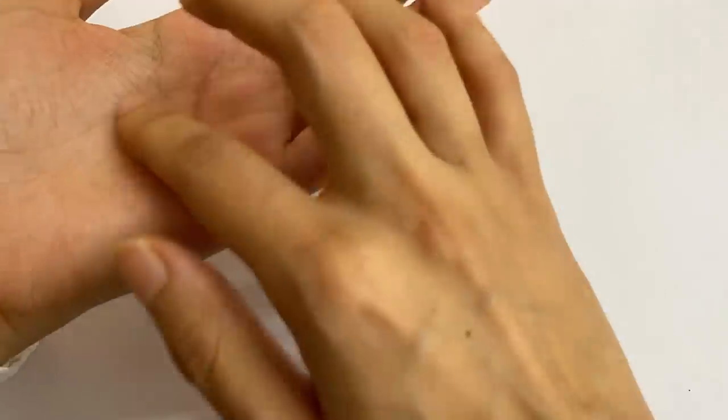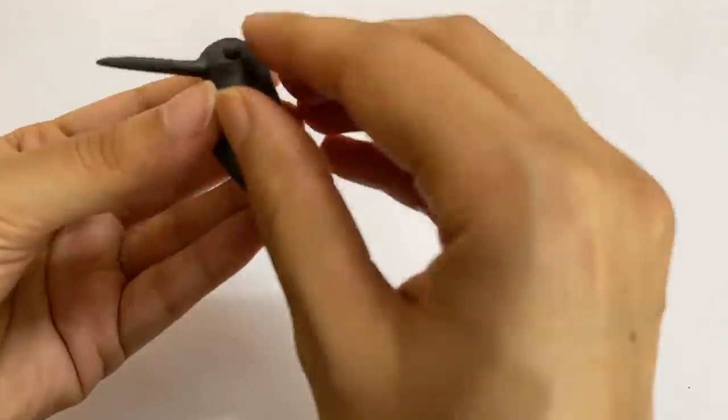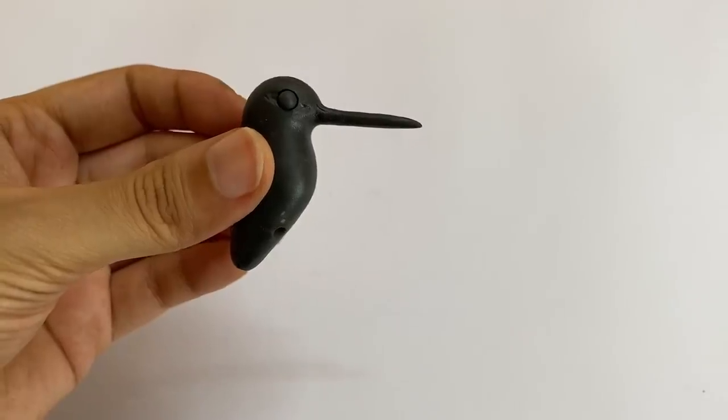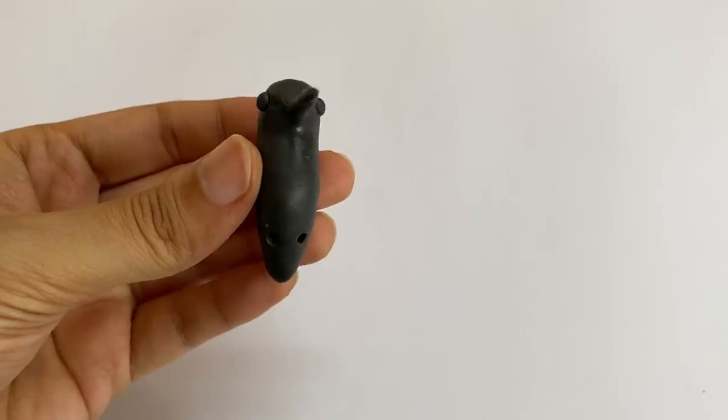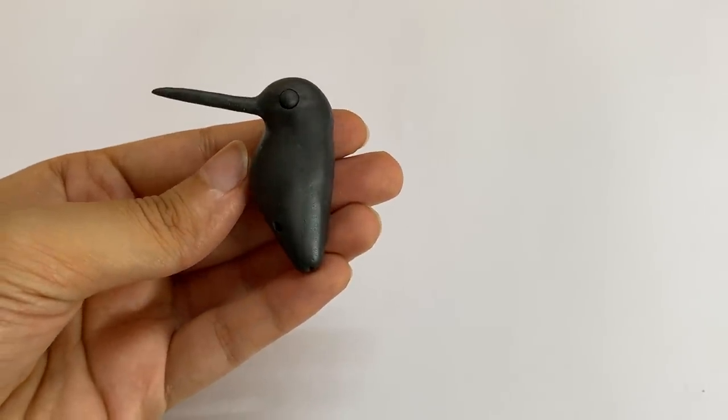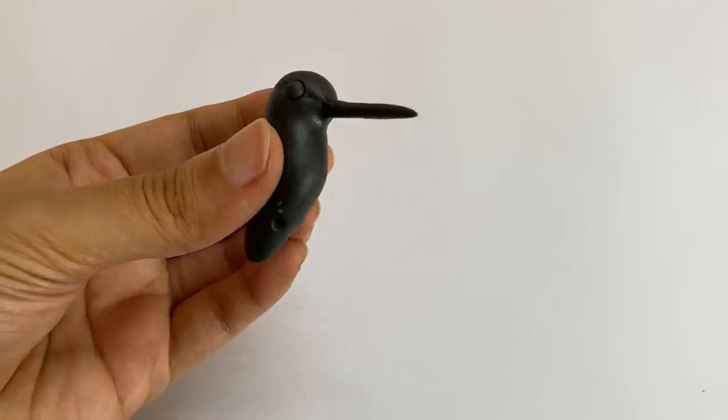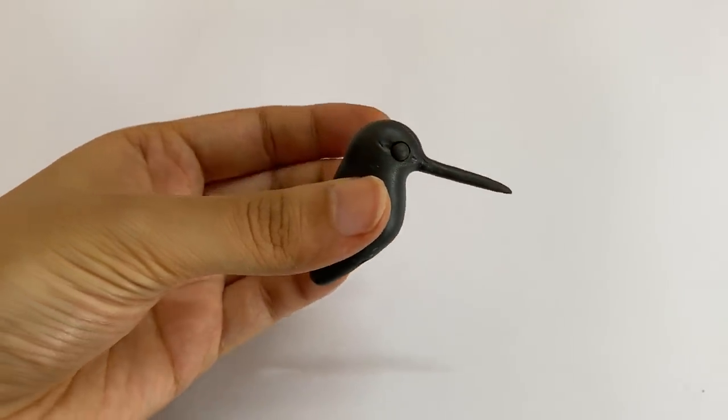Now roll up two smaller balls out of the same mix for the eyes of the bird. Then use the back of a paint brush, preferably size 0, to create two smaller depressions on either side of the head of the bird.